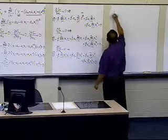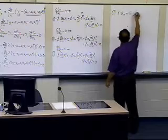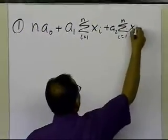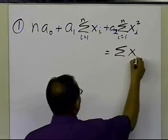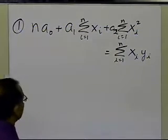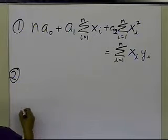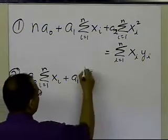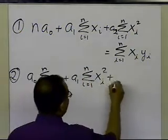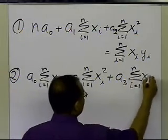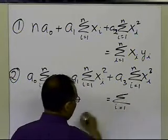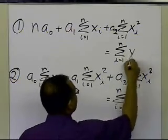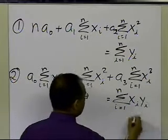So if I now write down the equations, the first equation turns out to be: n times a0, plus a1 times summation of xi from i equals 1 to n, plus a2 times summation of xi squared from i equals 1 to n, equals summation of yi from i equals 1 to n. The second equation will be: a0 times summation of xi, plus a1 times summation of xi squared, plus a2 times summation of xi cubed, equals summation of xi times yi.